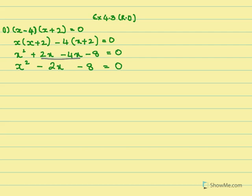Now we have a proper quadratic equation and we need to factorize it. We know the product should be minus 8 and the sum should be minus 2. So the factors for this will be minus 4 and plus 2.